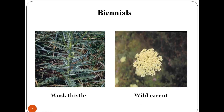Biennial weeds usually live for two years. In the first year, seeds germinate and grow without flowering, forming what is called a rosette. A rosette is a plant form with no central stalk — all leaves arise from close to the soil surface. In the second year of growth, biennials set up a flowering stalk. After flowering and seed production, biennials die.